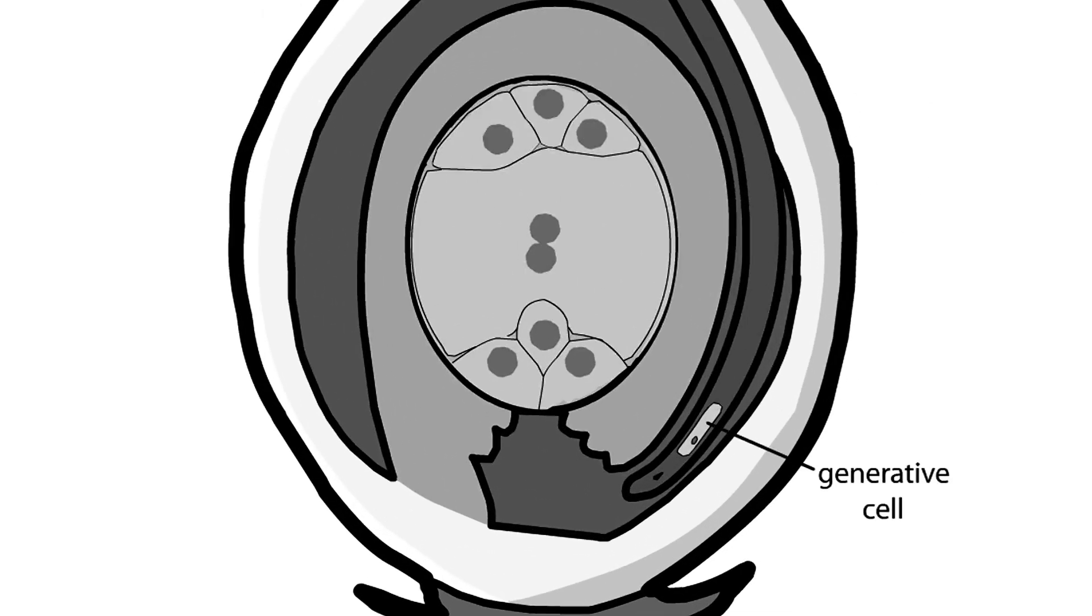A haploid cell called the generative cell travels down the pollen tube. The generative cell travels behind the tube nucleus, which is the nucleus of the large cell and makes up the bulk of the pollen tube and grain. The generative cell divides by mitosis to produce two haploid sperm cells.